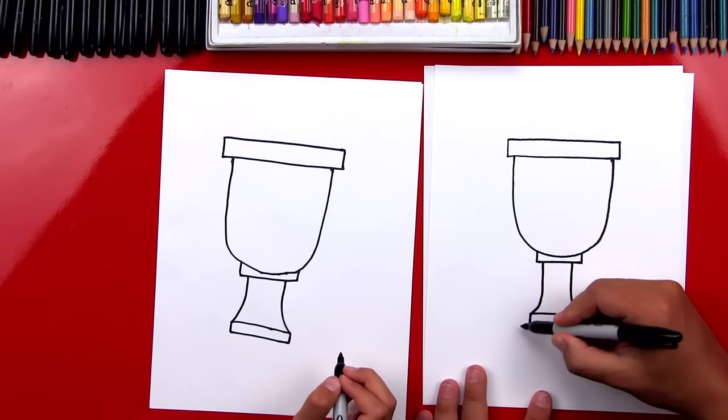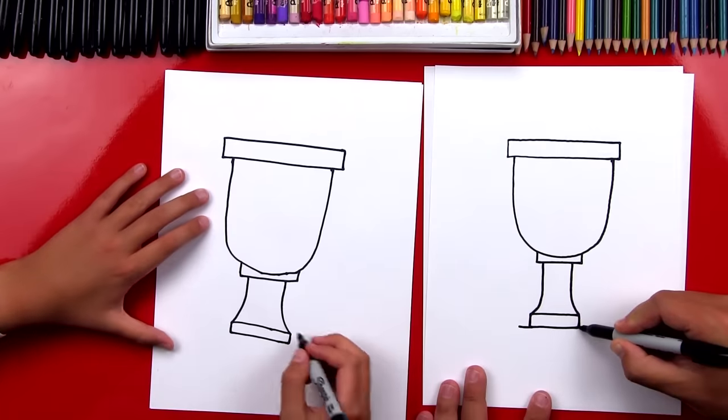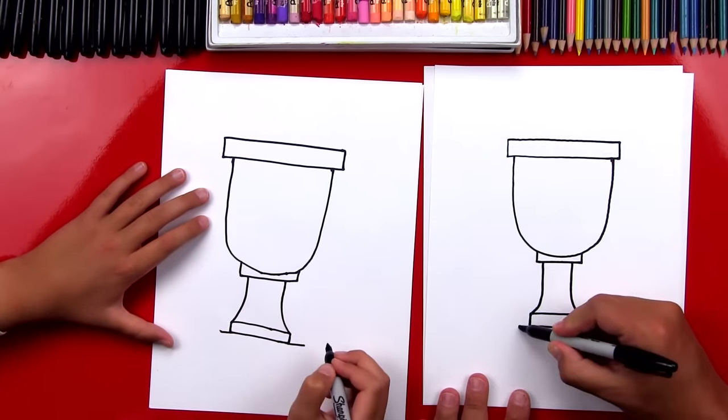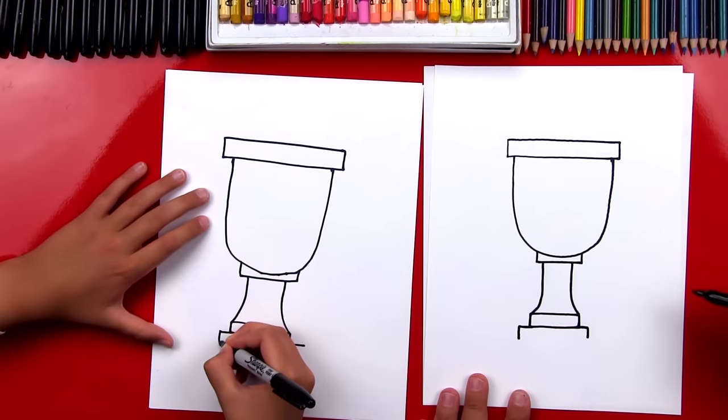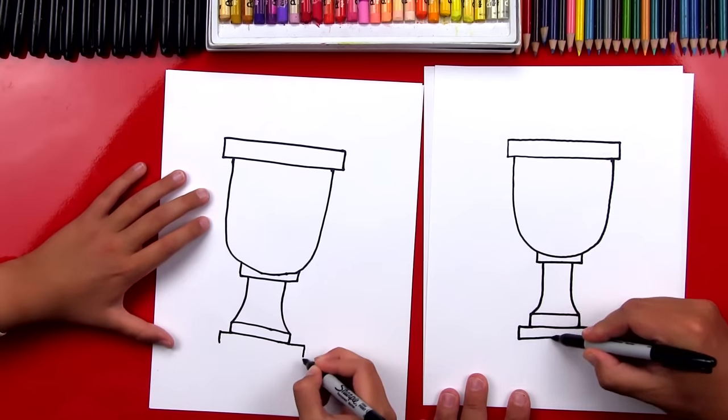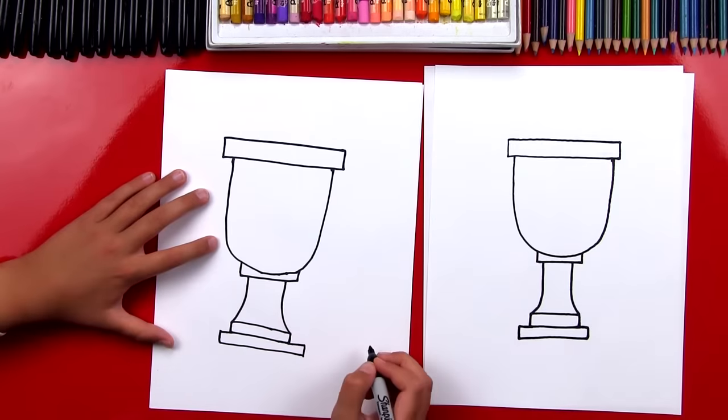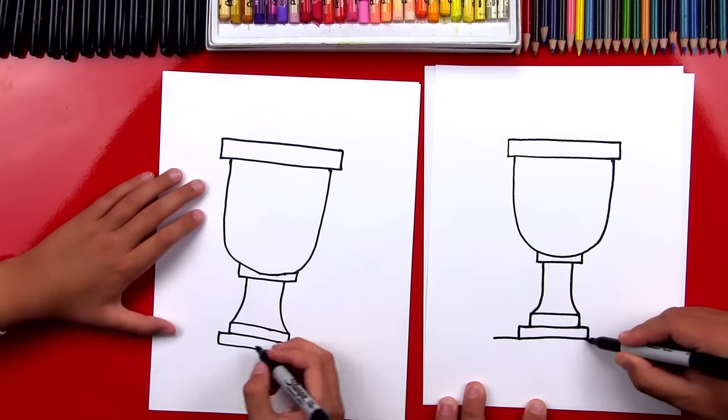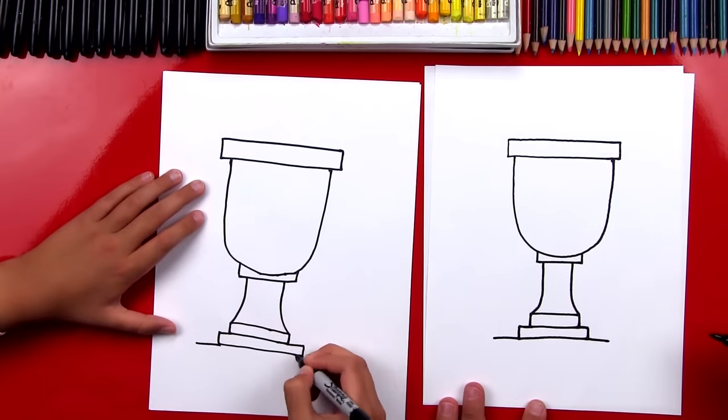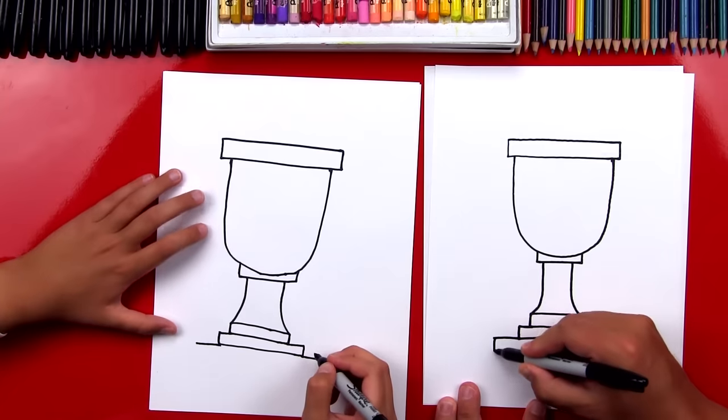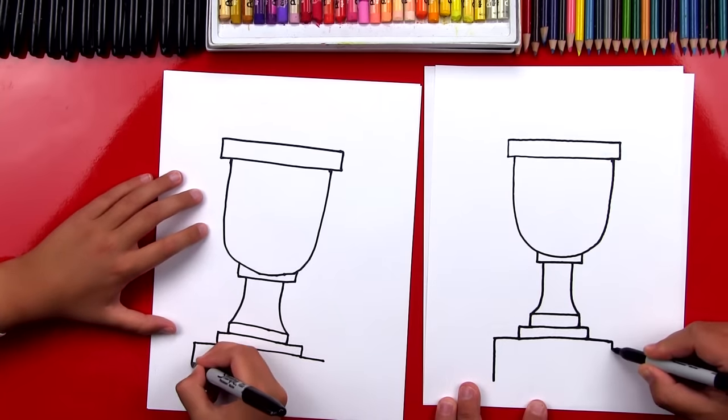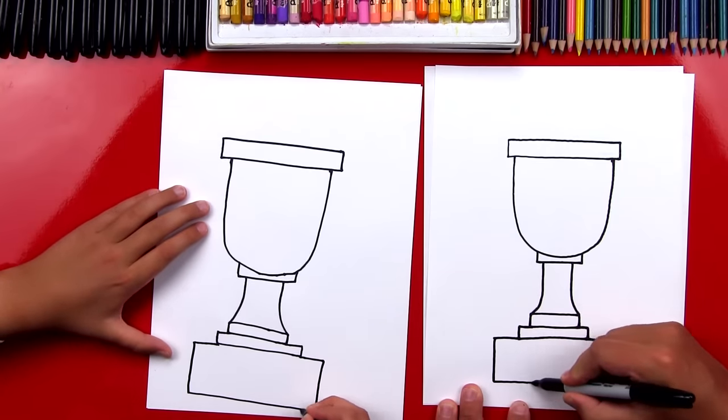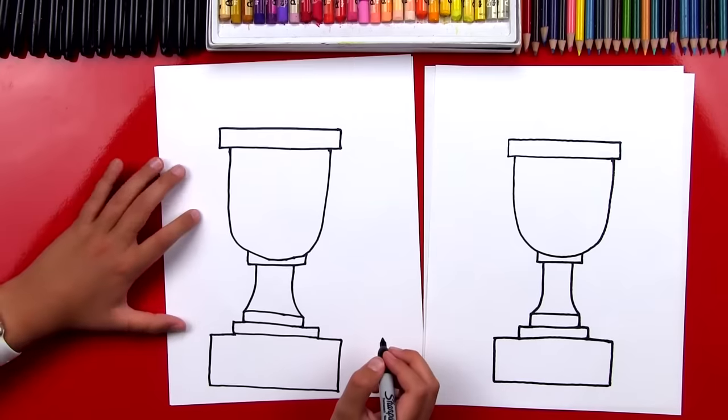Now let's draw a skinnier rectangle. Draw another one right here, two little lines that come out further and then two little lines coming down, then connect those from the left side over to the right. Now we can draw the base of our trophy. Draw two more lines that come out and this base is gonna be bigger, so draw two bigger lines that come down. And then connect those. There's the base of our trophy.